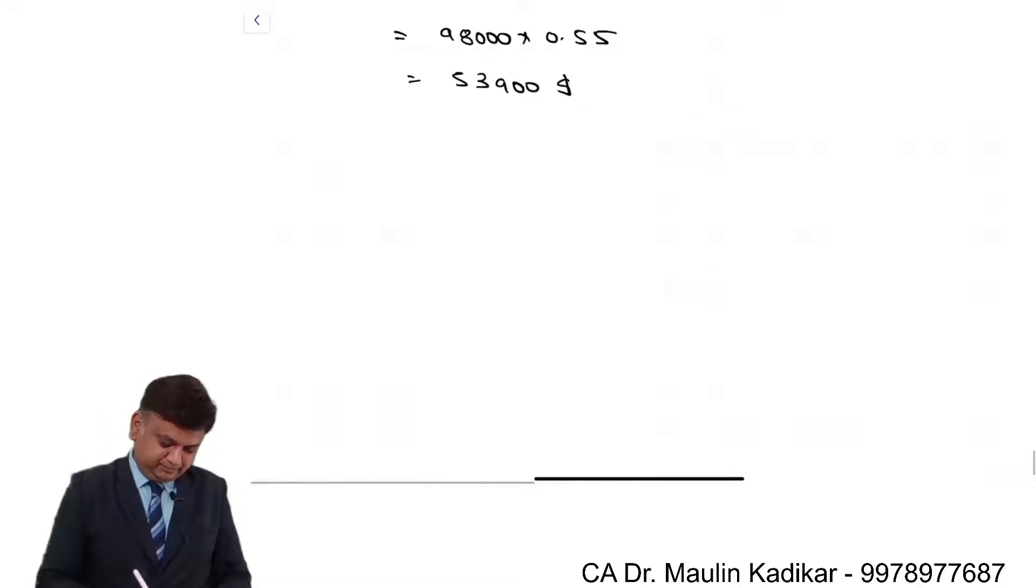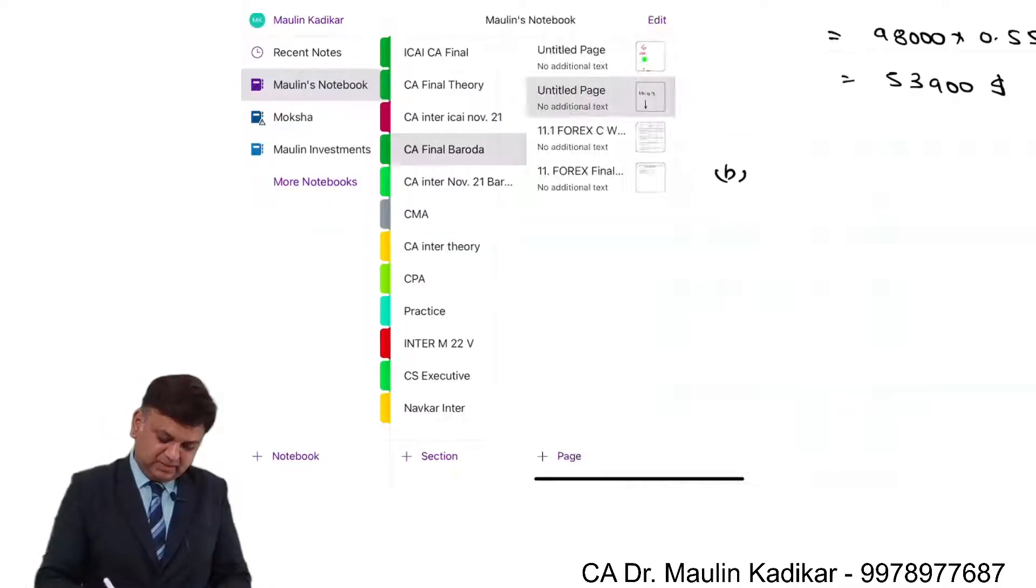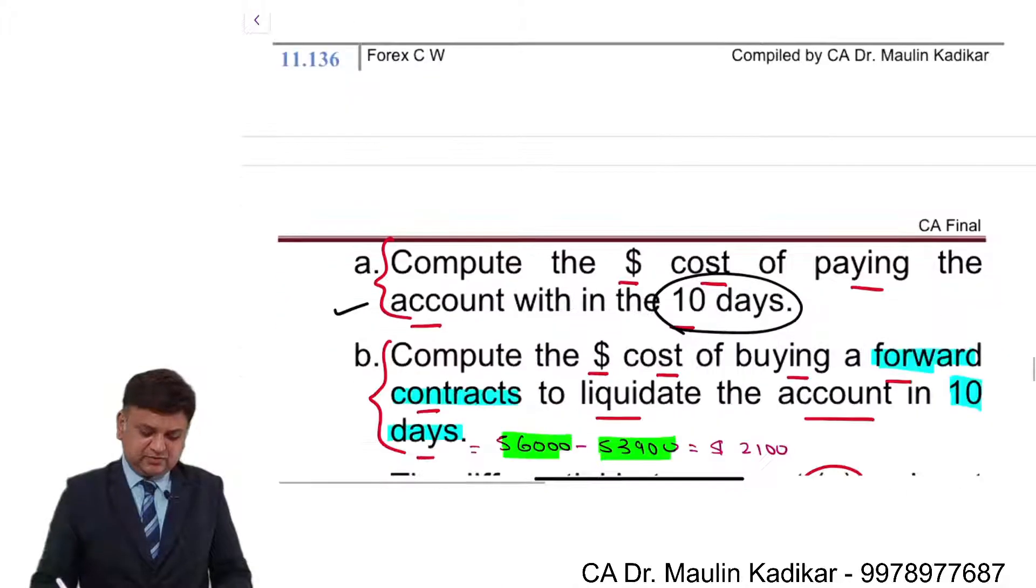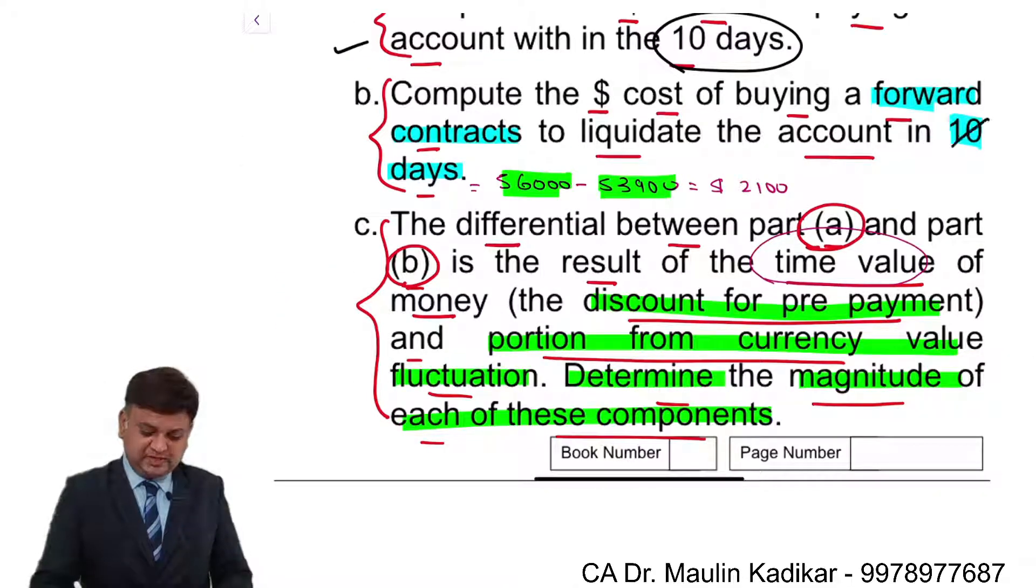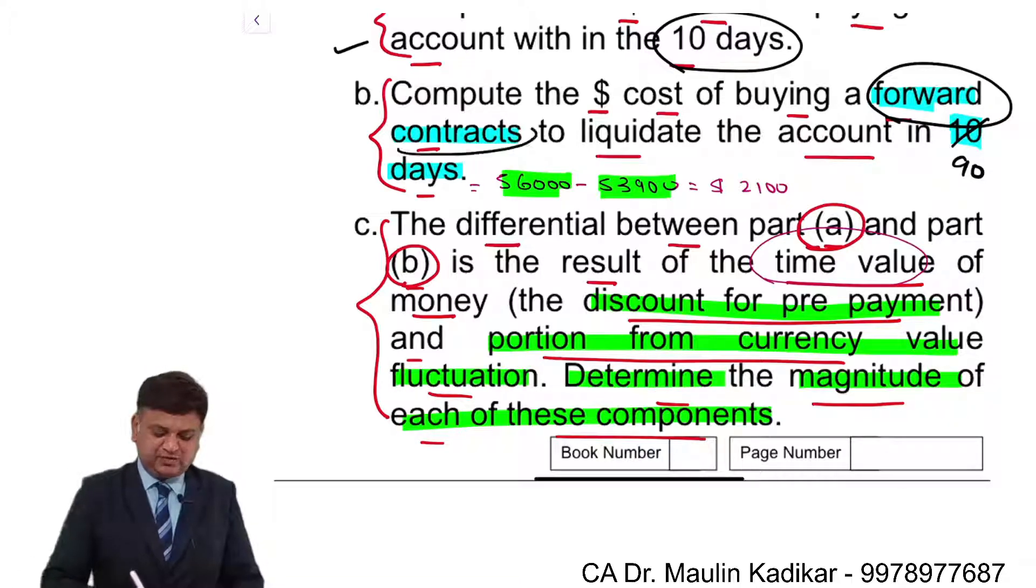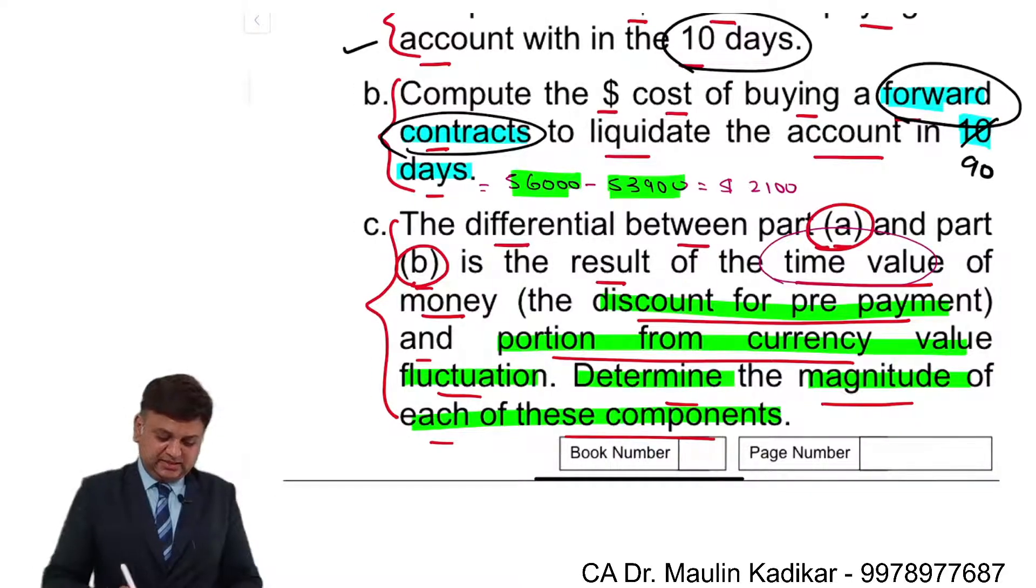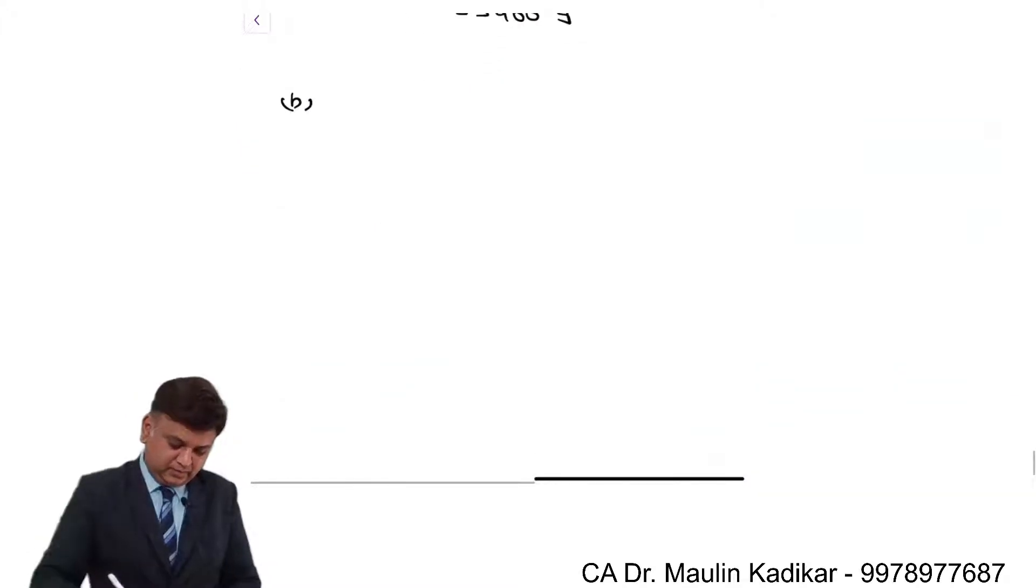B question. I have not changed the language of the question. However, in my opinion it should be 90 days. Compute the dollar cost of buying forward contract. Absolute clarification is there: to liquidate the account in 90 days. So let us answer.